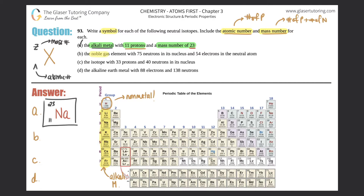Part b asks for the noble gas with 75 neutrons and 54 electrons in a neutral atom. The noble gases are in group 18, from helium down to radon. Note that element Og is not classified as a noble gas as of 2020, since IUPAC still needs to characterize it. Noble gases are inert and don't react much.